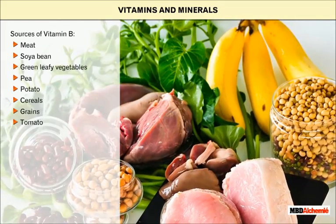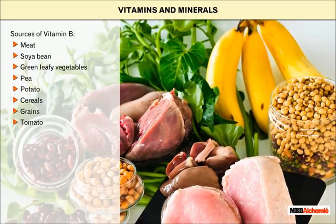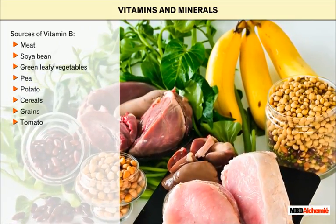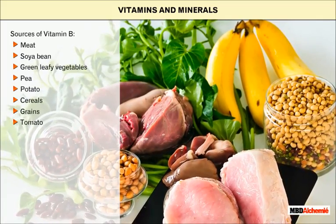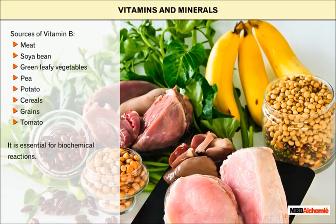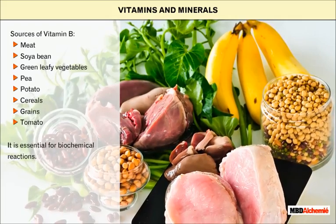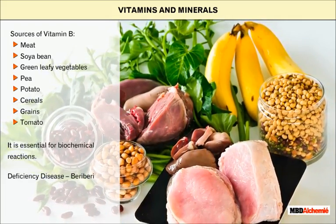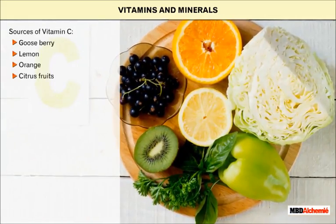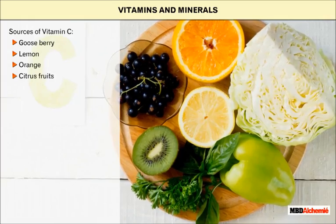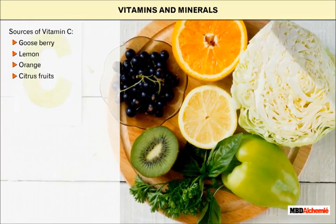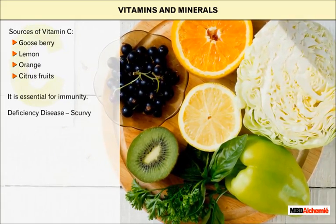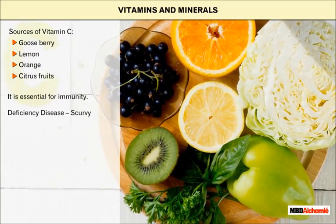Meat, soya bean, green leafy vegetables, pea, potato, cereals, grains, tomato, etc. are good sources of vitamin B. It is essential for biochemical reactions. Deficiency of vitamin B causes beriberi. Gooseberry, lemon, orange and other citrus fruits are good sources of vitamin C. It is essential for immunity. Deficiency of vitamin C causes scurvy.